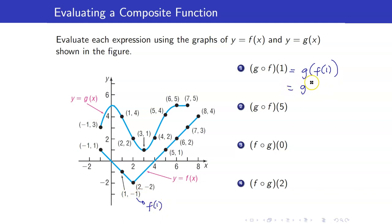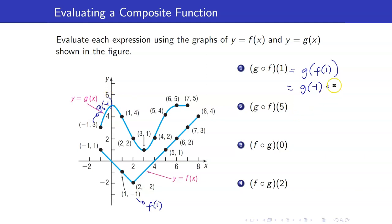Therefore, f of 1 is equal to negative 1, and we evaluate g of negative 1. For g of negative 1, this is the y-coordinate when x is equal to negative 1, but this time we are looking at the graph of g. When x is negative 1, this is the point negative 1 comma 3. So 3 is your g of negative 1, meaning this is equal to 3.